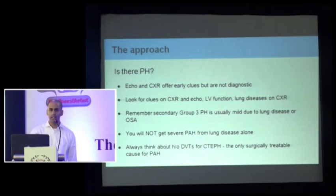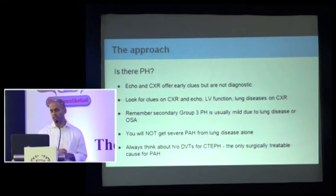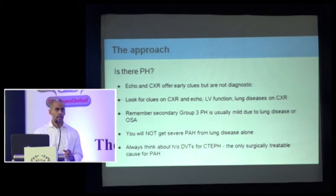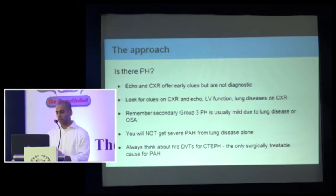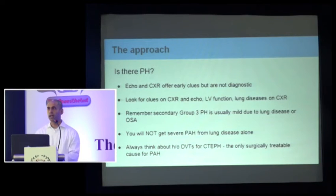When assessing for pulmonary hypertension, the X-ray and echo give early clues but are not diagnostic. The echo report may say RVSP 80, severe PH — but you have to take that with a grain of salt. The RVSP alone does not prognosticate the patient. A high RVSP is not telling you the patient is going to die. Using RVSP 80, 60, or 40 cutoffs is a little unscientific. I urge caution on using RVSP alone as a prognostic criterion.